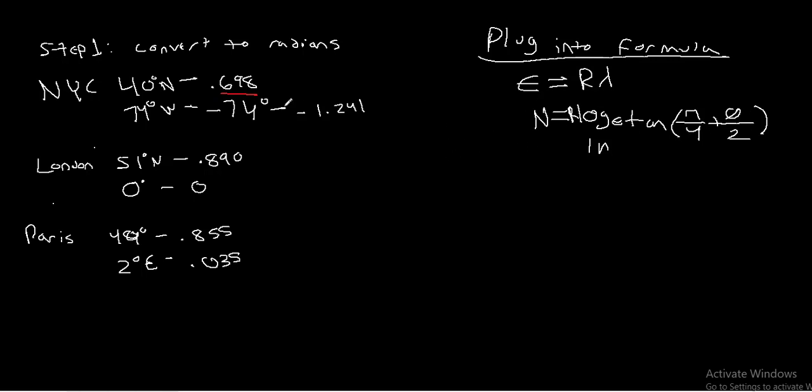So let's go ahead and plug in some of these values here. Start with NYC. So our easting is going to be equal to r lambda. Our r, in this case, is going to be 3,959, same as last time. And our lambda is going to be negative 1.241, because we're west of the prime meridian, which means our angle is negative. So if you do the math on that, you get a value of negative 4,913 miles.